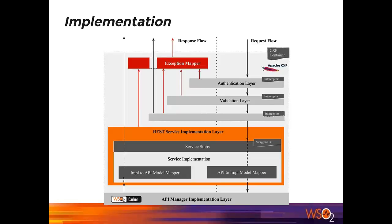Here is a high-level diagram of a single API implemented using Apache CXF. We used our CodeGen tool to generate server stubs, which minimizes the gap between the implementation and the Swagger API definition and made development a lot easier. When we make changes to the API definition, we can easily regenerate from the Swagger definition. In this diagram, there are three important sections: a set of interceptors, the service implementation layer, and the exception mapper.